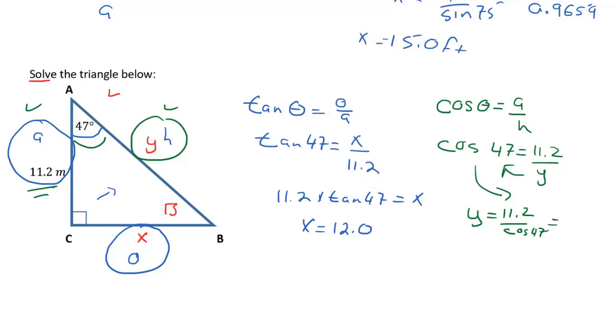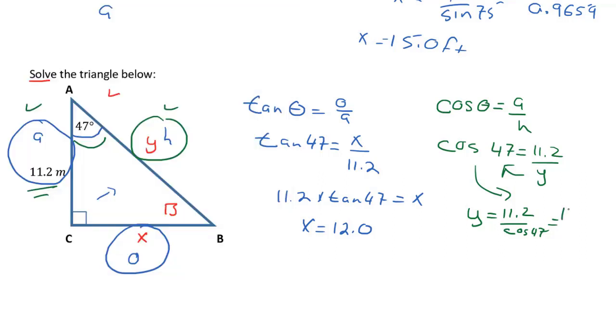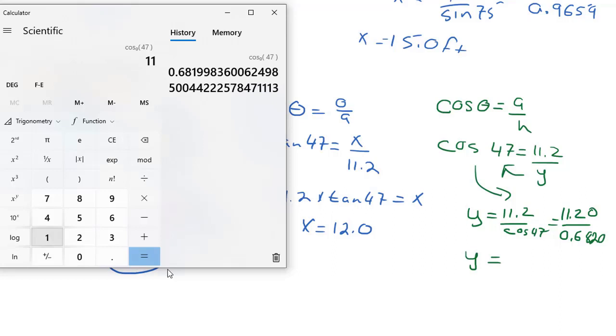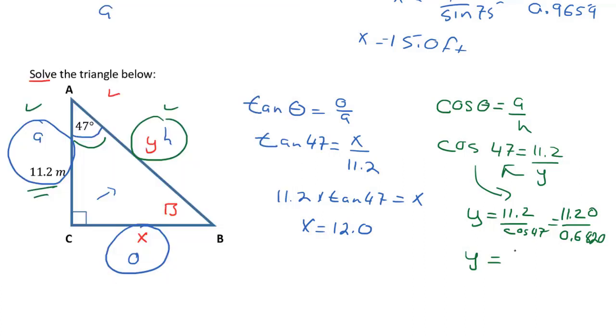I'm going to calculate what the cosine of 47 is. So I type in 47, my drop down, cosine, and I get 0.68199. So I'm going to round that to four decimal places, and it's going to be 0.6820. Again, getting my calculator out, let's calculate y. 11.2 divided by 0.6820. And I end up getting y equaling 16.4.